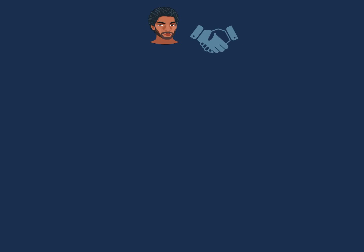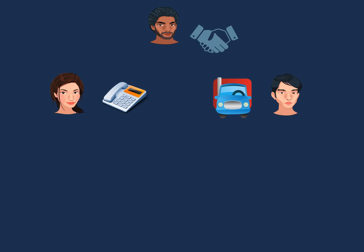A company may employ a lot of people in order for it to achieve its objectives. For instance, it might need employees to negotiate with suppliers, to answer telephone calls, to deliver goods, and to record transactions on the accounting system.